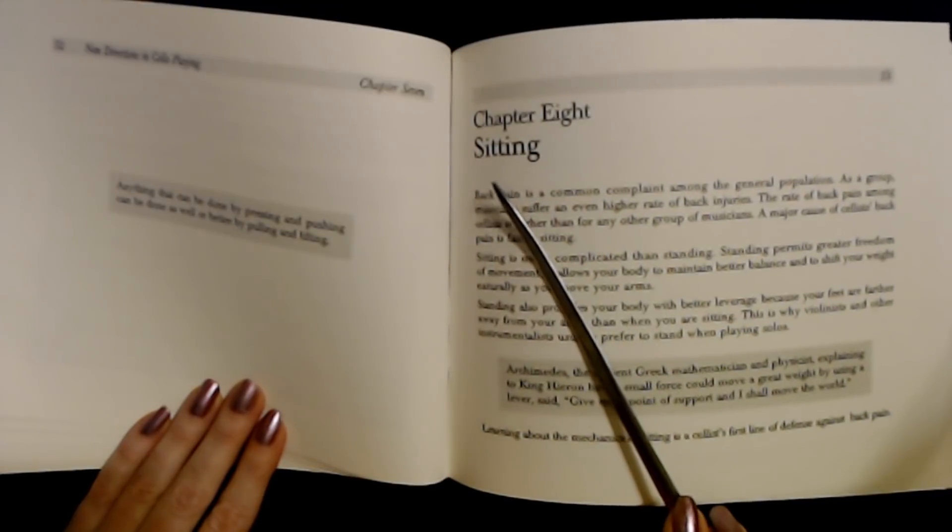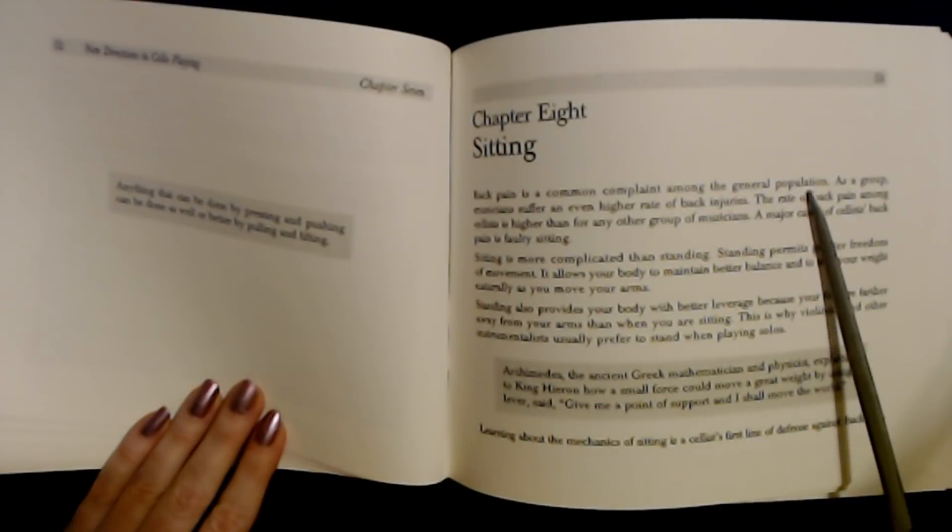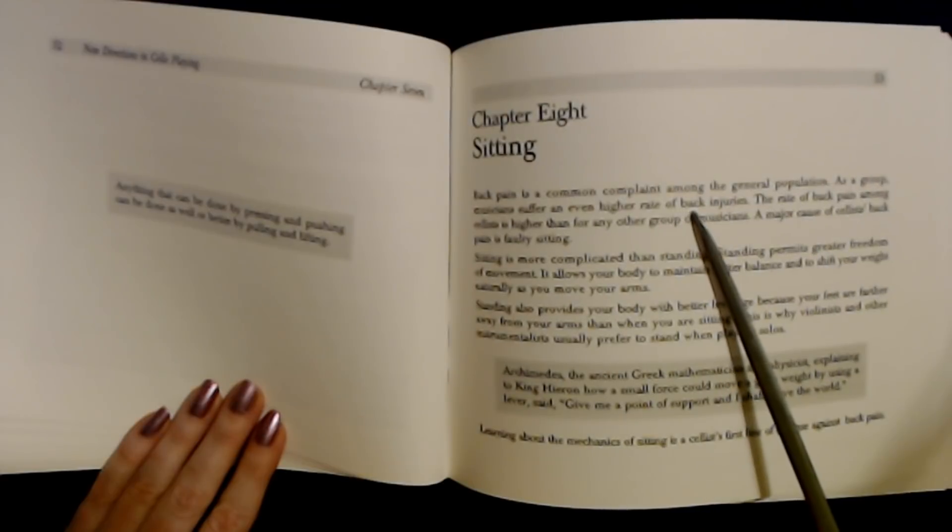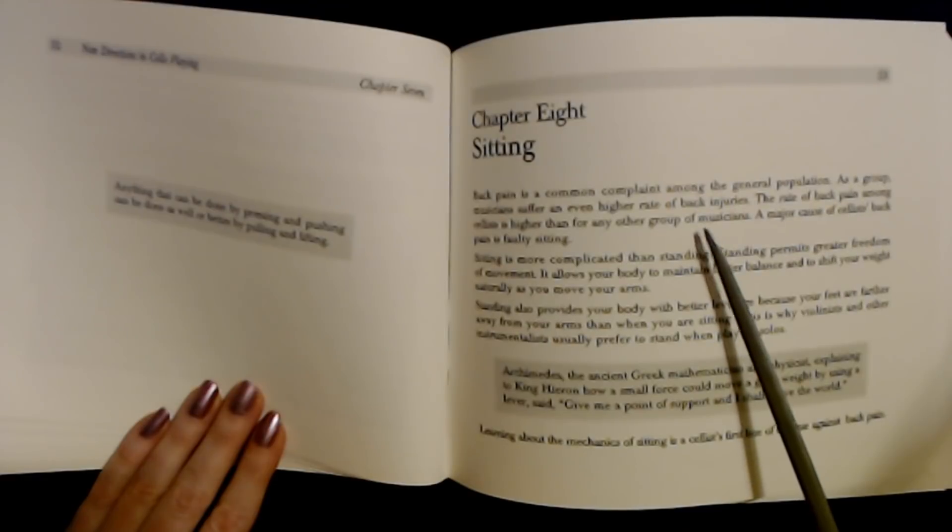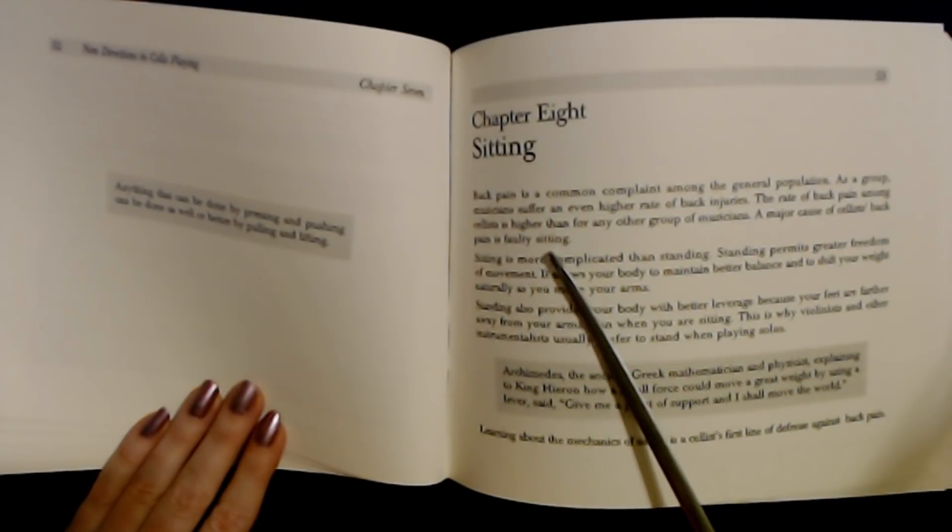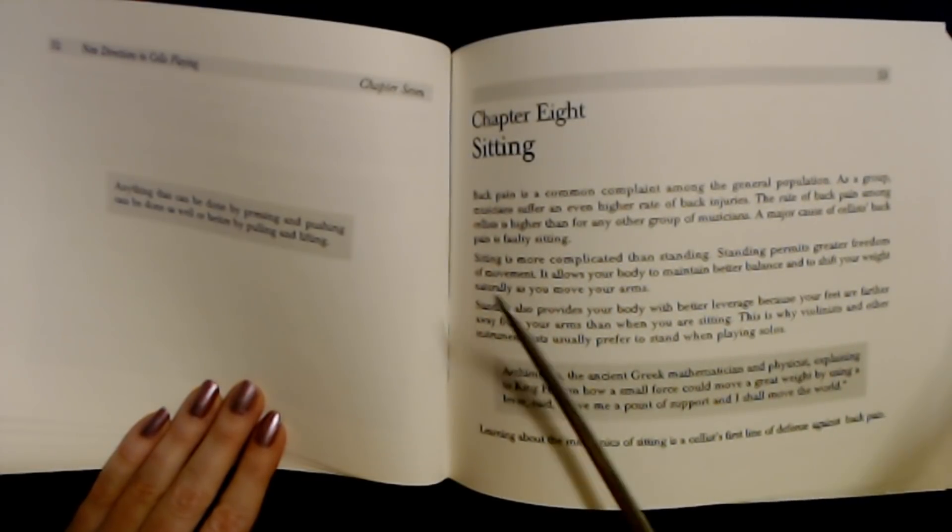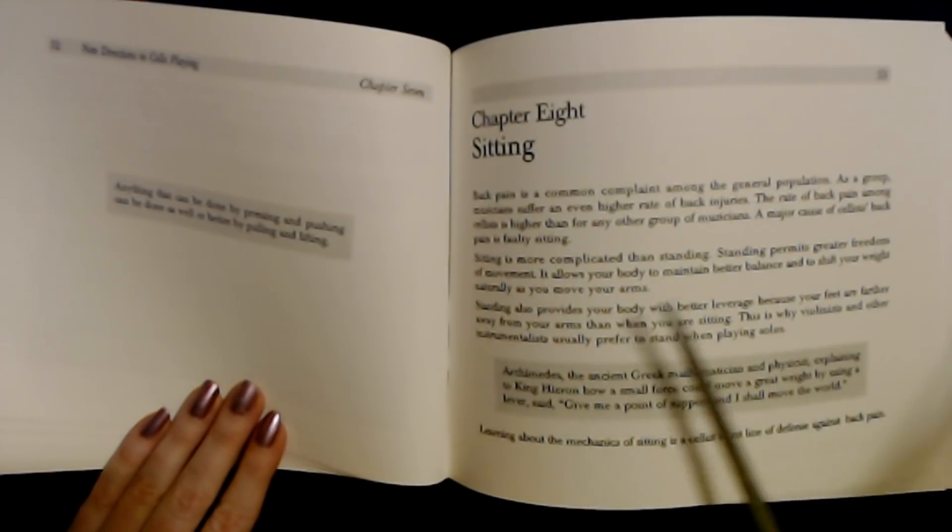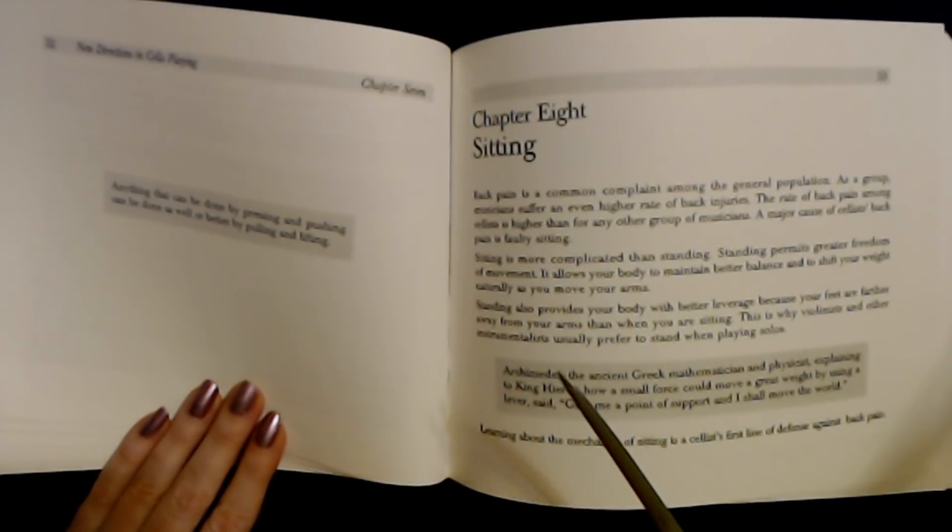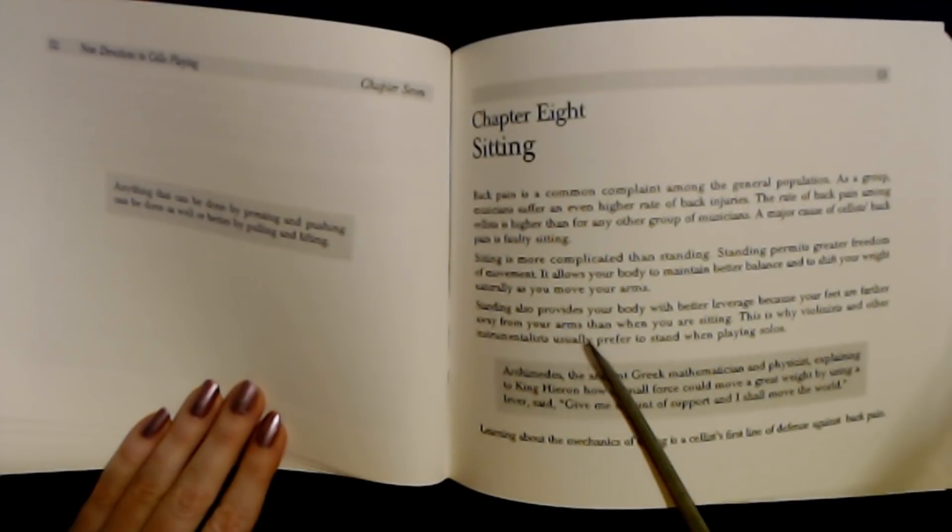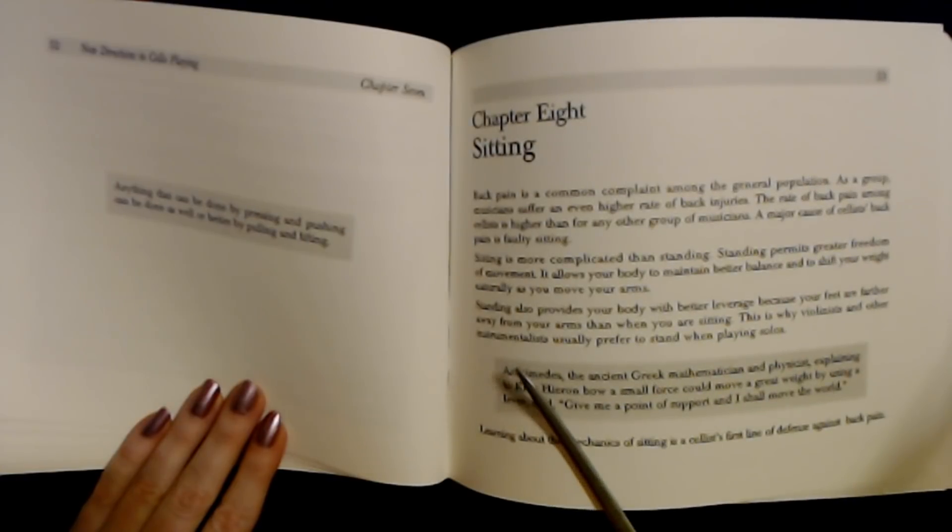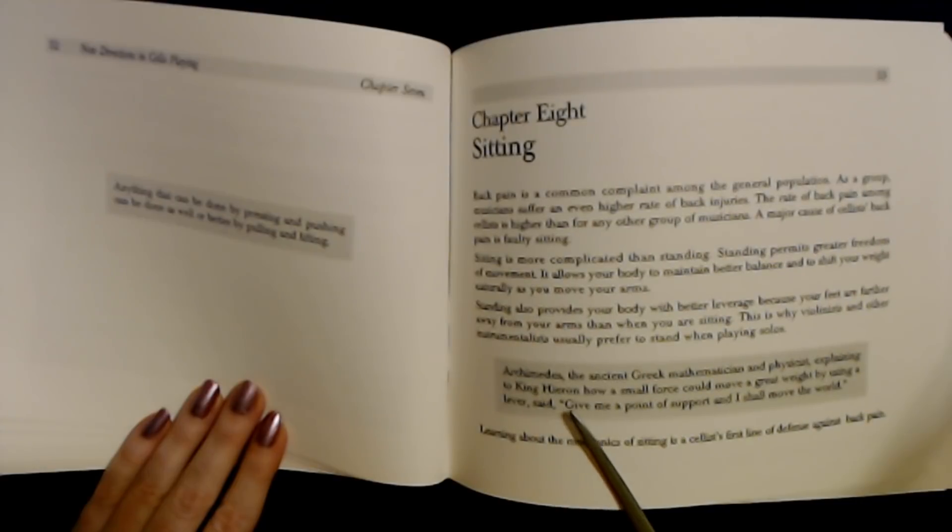On to back pain. As a group, musicians suffer a higher rate of back injuries. The rate of back pain among cellists is higher than any other group of musicians. A major cause of cellists' back pain is sitting. Sitting is more complicated than standing. Standing permits greater freedom of movement and allows your body to maintain better balance and to shift your weight naturally as you move your arms. Standing also provides your body with better leverage because your feet are farther away from your arms than when you are sitting. This is why violinists and other instrumentalists prefer to stand when playing solos.